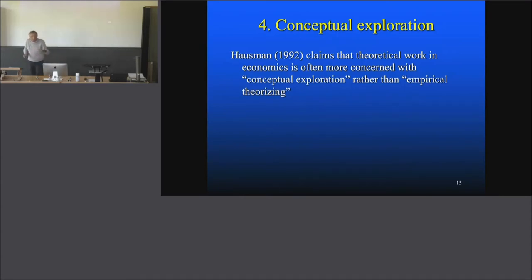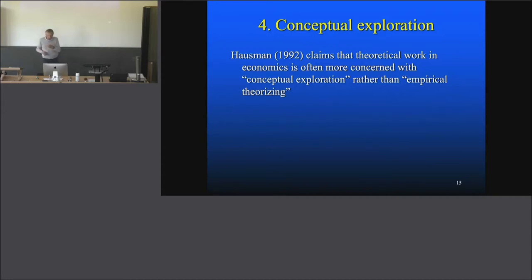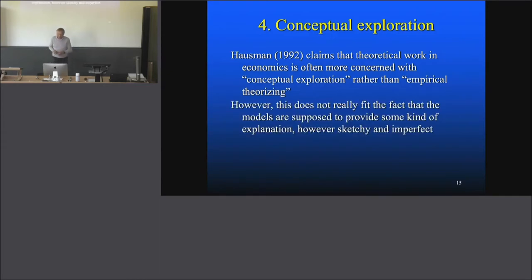This is also necessary whenever you write a model or a theory. You've got to be clear about what the concepts mean, and you may illustrate them, possibly even define them, how they're connected, and so on. Horstmann thinks that this is the main work they're doing — just conceptually exploring what's in this idea of weak racial preferences and their consequences.